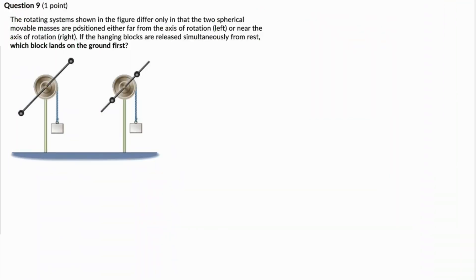In this question, a rotating system shown in the figure differs only in that the two spherically movable masses are positioned either far from the axis, which is over on the left, so they are far from the axis.